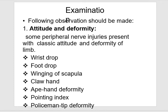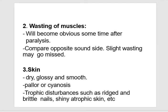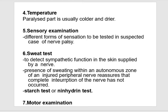On examination, observation should be made: attitude and deformity — for example wrist drop, foot drop, winging of scapula, claw hand, ape hand deformity, pointing index, and policeman's tip. Wasting of muscles. Skin changes: pallor, cyanosis, the skin becomes dry, glossy, and smooth, and trophic changes occur. Temperature changes and sensory loss. The sweat test detects sympathetic function; presence of sweating within the autonomous zone of an injured nerve reassures that complete nerve division has not occurred. Other tests include the starch test or ninhydrin test, and motor examination.